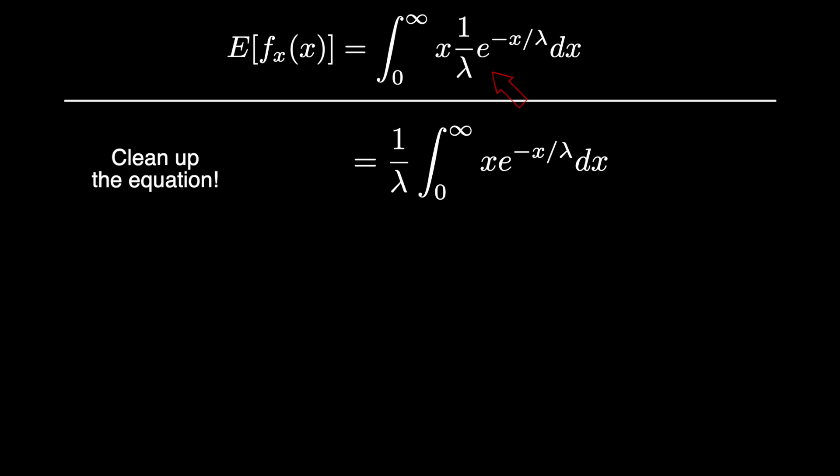The first step in this integral is to clean up the function, and this can be done by moving any constants to the outside of the integral. In this case that's going to be 1 over lambda.